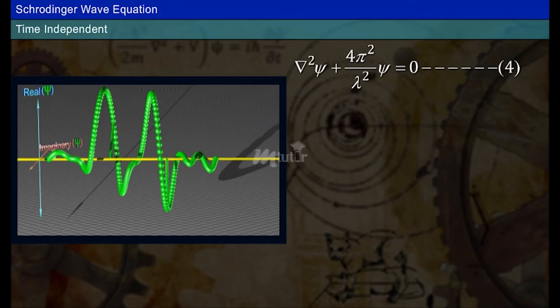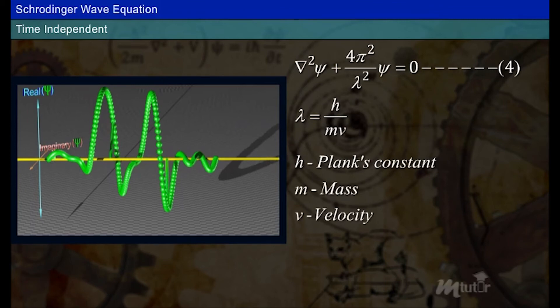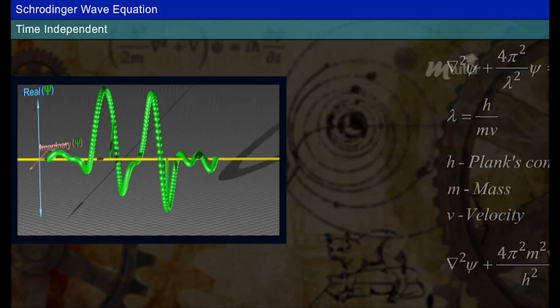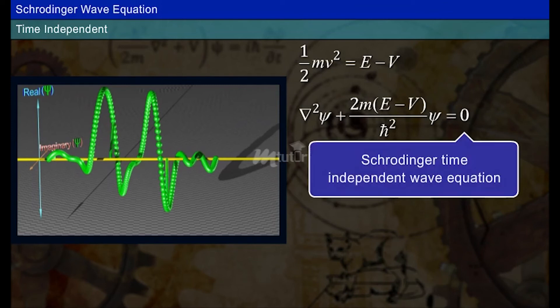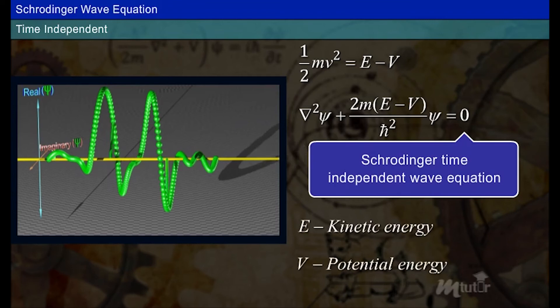According to de Broglie equation, lambda is equal to h divided by mv, where h is Planck's constant, m is mass, and v is velocity. Substitute the value of lambda in equation 4, we get equation 5. We all know that the energy equation is half mv square is equal to E minus V. Apply this to equation 5, we get a Schrödinger time-independent wave equation. Here E denotes kinetic energy and V denotes potential energy.